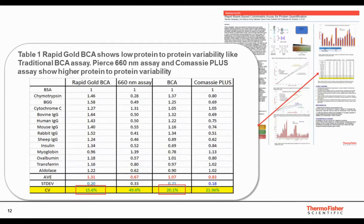We also see very low protein-to-protein variability with both the Rapid Gold BCA and the traditional BCA across 14 different proteins. Dye-based assays, by contrast, show very high protein-to-protein variability, which is undesirable.